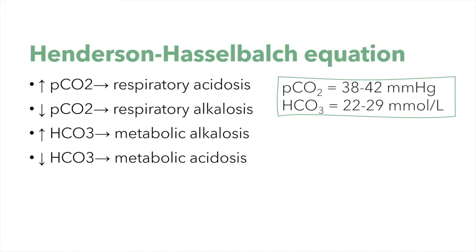Based on the Henderson-Hasselbalch approach, the causes of acidosis and alkalosis can be respiratory or metabolic. Unfortunately, bodies are very smart, so if pH changes due to a disease the other systems will try to compensate to bring back the pH within the normal range, making it difficult to find the cause of the alteration. As a general rule, the primary mechanism of the derangement always occurs in the same direction as the pH, and a compensatory mechanism will never bring the pH out of the normal range.